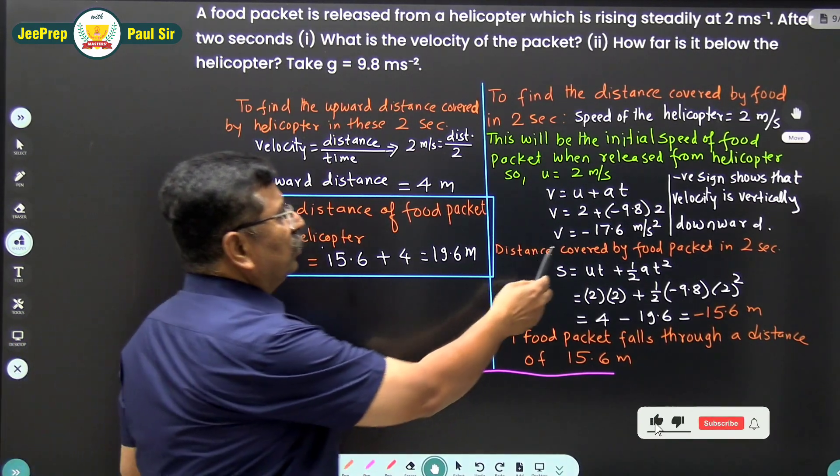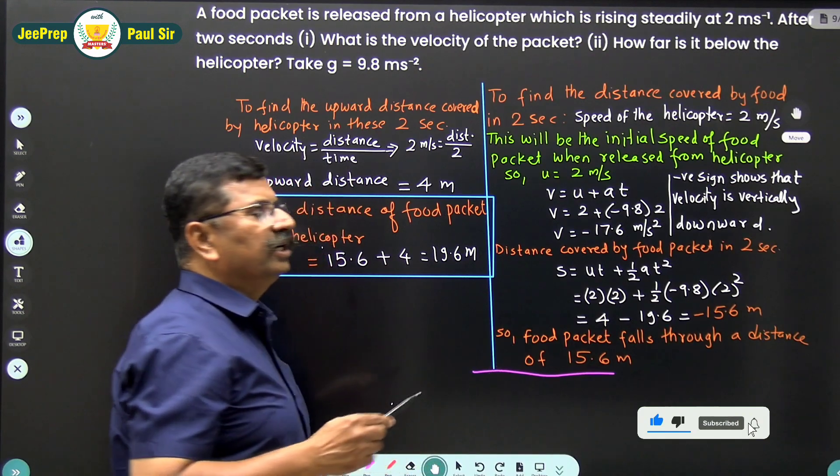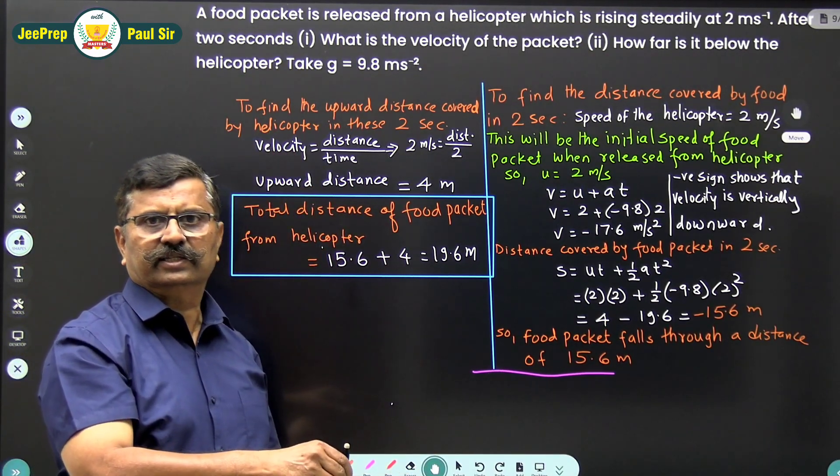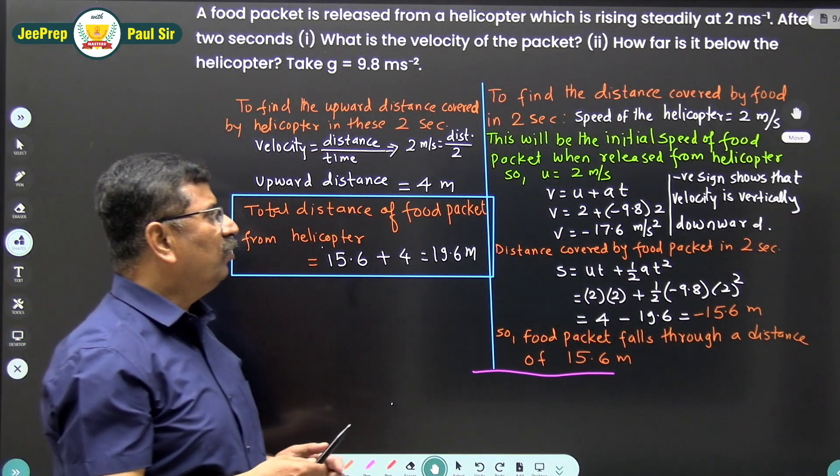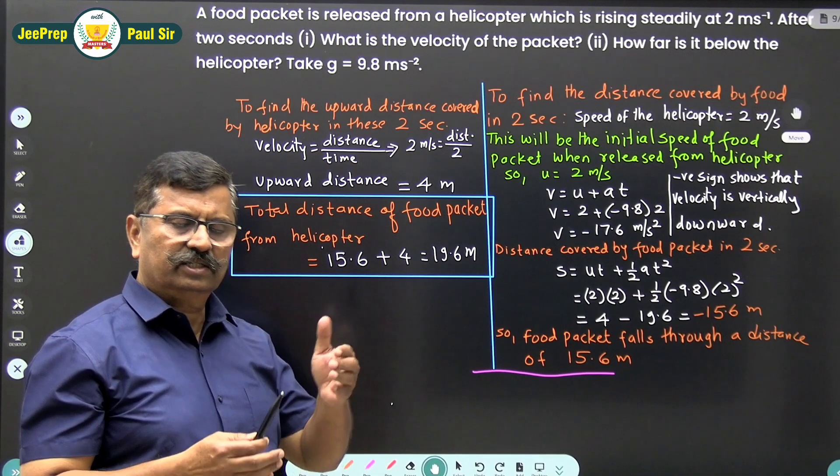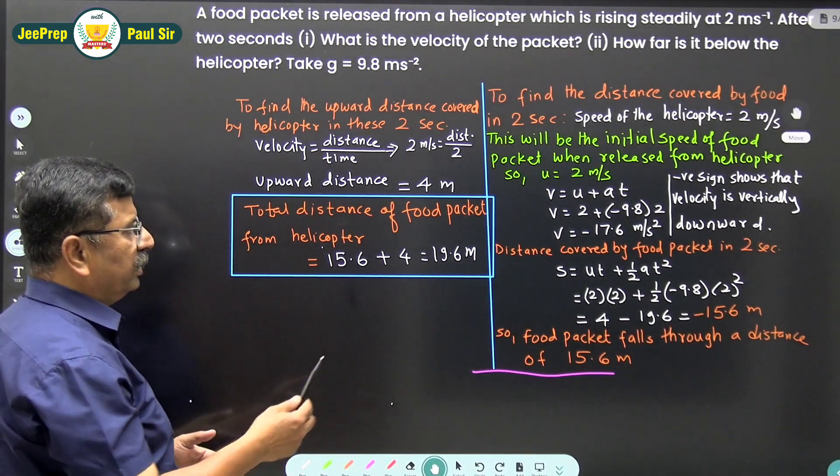This negative sign shows that the velocity is in the vertically downward direction because the food packet is falling. Now, what is the distance covered by the food packet in 2 seconds?